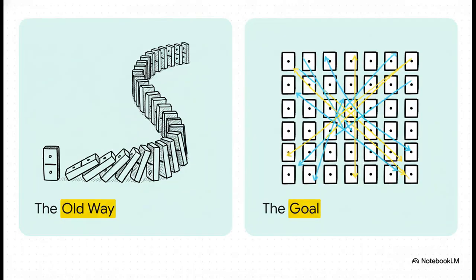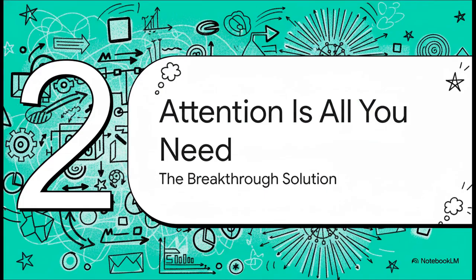To put it another way, the old way was like watching dominoes fall, one after another, in a long line. The goal, the dream, was to find a way to see all the dominoes at once, to get all their relationships instantly, all in parallel. And that, right there, brings us to the breakthrough.